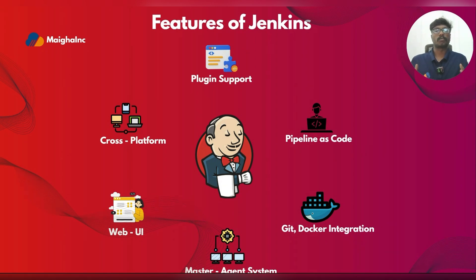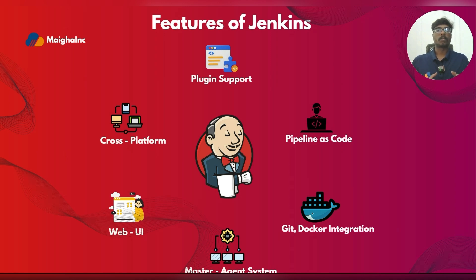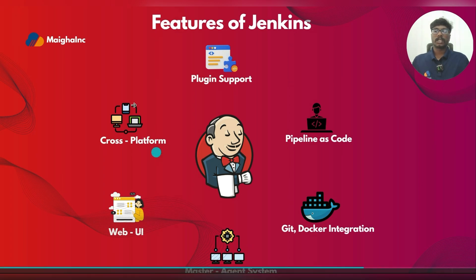Now let's look at what makes Jenkins so powerful. First is plugin support. Jenkins supports a huge number of plugins that let you connect Jenkins with other tools like Docker, GitHub, Slack, and even cloud providers like AWS. No matter what tools your team uses, Jenkins can probably connect to it.